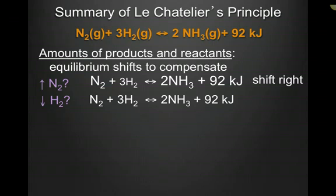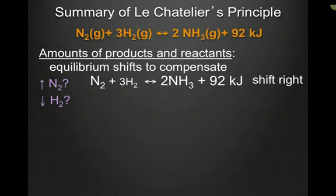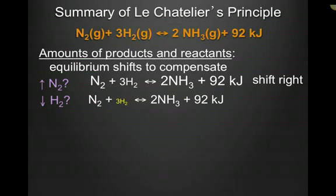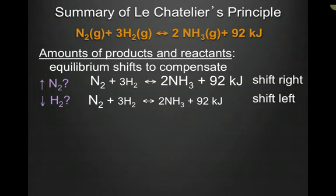Let's look at this same equilibrium. What happens now if I decrease the hydrogen — in other words, I remove the hydrogen? If I remove the hydrogen, the equilibrium has to shift in a direction that replaces some of it. This equilibrium is going to shift to the left, which means ammonia is going to decrease and nitrogen is going to increase.